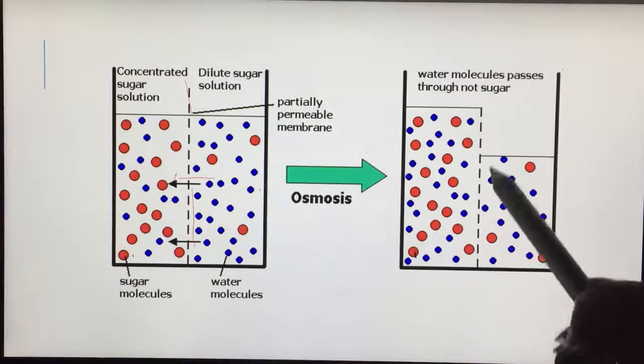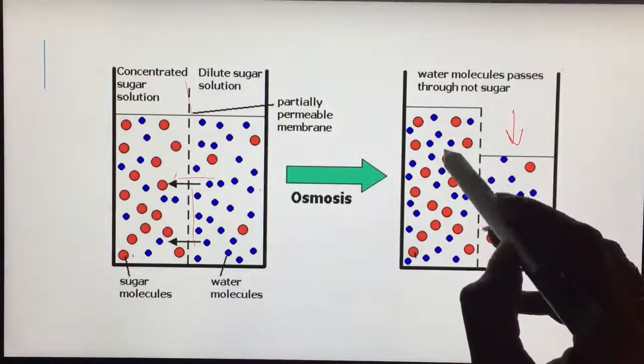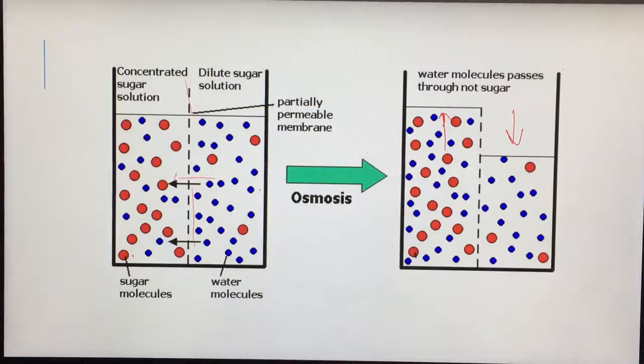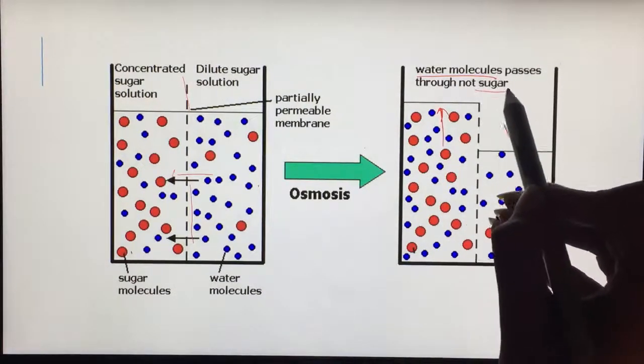The ultimate thing that happens is the volume goes down on this side and increases on this side of the membrane. Remember, only water molecules pass. Sugar molecules do not.